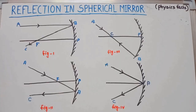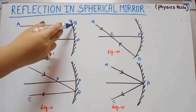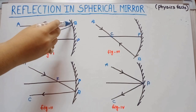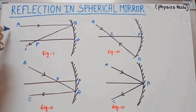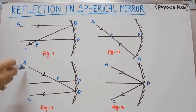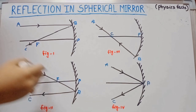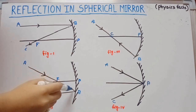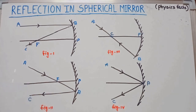Now let's go to some important figures. In figure one, if a ray AB — the incident ray — is parallel to the principal axis, after reflection it goes through the focus. That is rule one. Second rule: if the incident ray AB passes through the focus, after reflection it goes parallel to the principal axis.